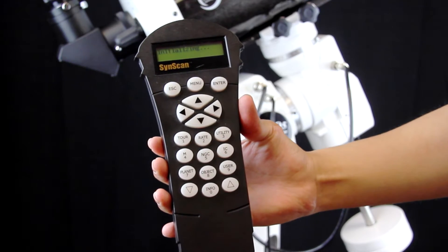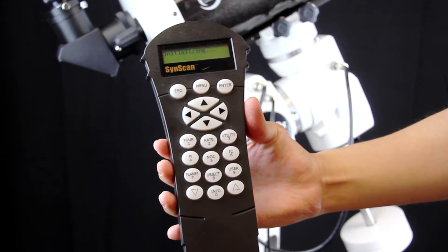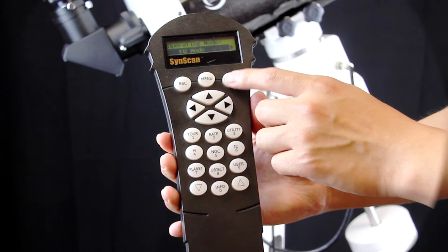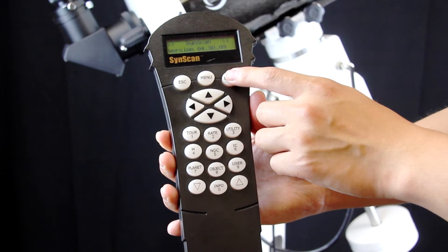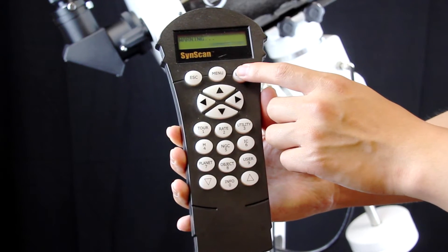First we need to do some basic setup. For azEQ5, we have two modes, azimuth or equatorial mode. We will choose the EQ mode, then it shows your firmware version and warnings.